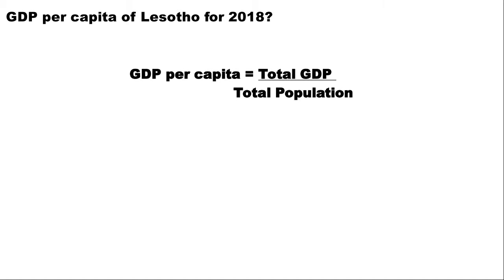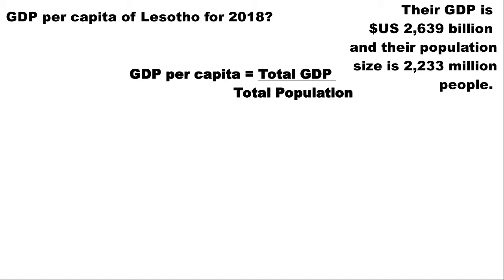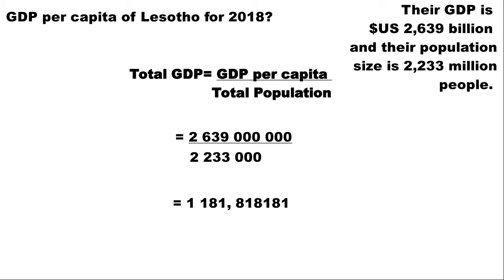Remember, our formula is GDP per capita equals GDP divided by the total population. The GDP value that we have for Lesotho at this point in time is 2.639 billion US dollars — that would go at the top of your fraction. The current value for Lesotho's population is 2.233 million people — this value would go at the bottom of your fraction. Pop that into your calculator and you'll get an answer of 1,181.81. GDP and GDP per capita is measured in US dollars, so ultimately the GDP per capita for Lesotho would be 1,181.81 US dollars. GDP per capita is just an indication of how well a country is doing economically — in general, the higher the GDP per capita, the more developed that country is.